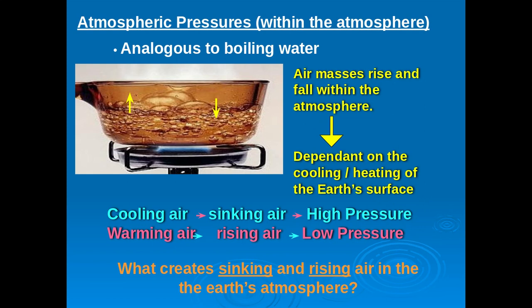Where do these different air parcel temperatures come from? It really depends on the cooling and heating of the Earth's surface. We'll find out that the Earth warms very unequally because the Earth is 75% water in terms of oceans and about 30% land masses. Because it's composed of both land masses and oceans, the Earth is warmed up very unequally.